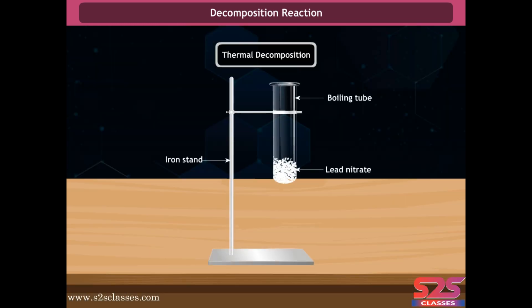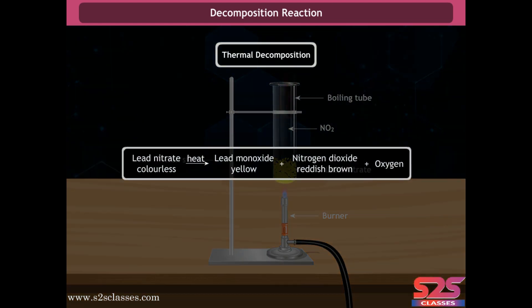Take about three grams of solid lead nitrate in a boiling tube. Note the color of the compound and heat it in the flame of a Bunsen burner. You will observe the emission of brown fumes, which are nitrogen dioxide. During this reaction, lead nitrate decomposes to form lead oxide, nitrogen dioxide, and oxygen gas.